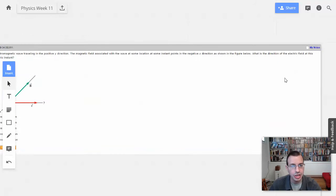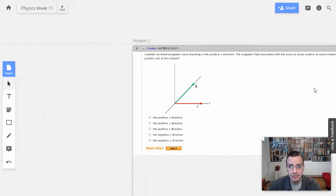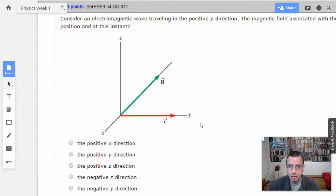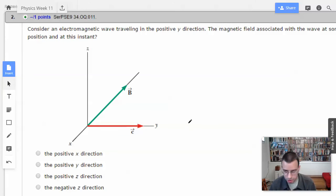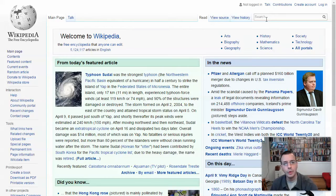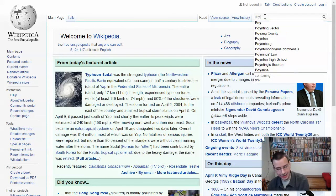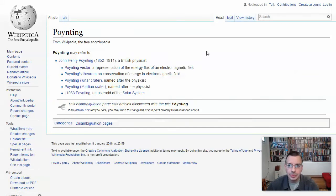Alright, so we're looking for the direction of the electric field. So this goes back to Poynting vector. Let's see if I can recall off the top of my head. Poynting vector, represented by s, will always be in the same direction as the propagation of the magnetic field.